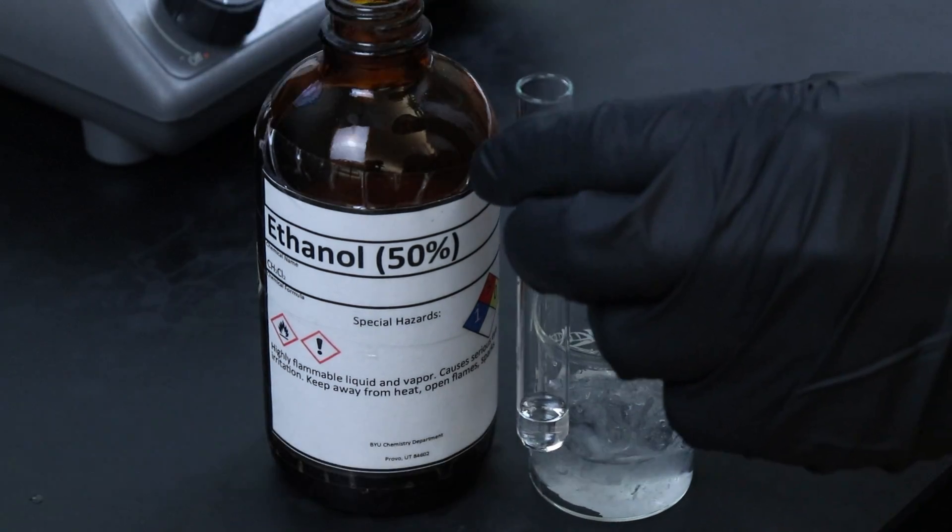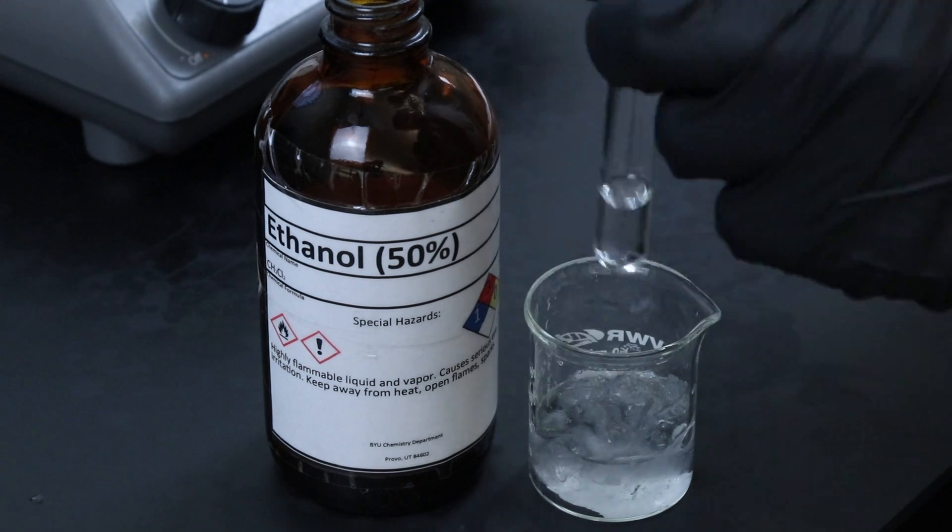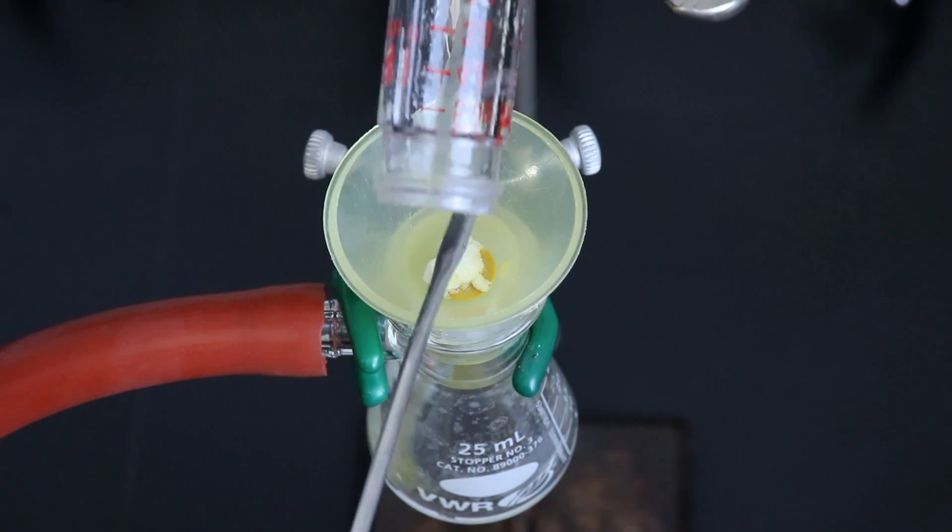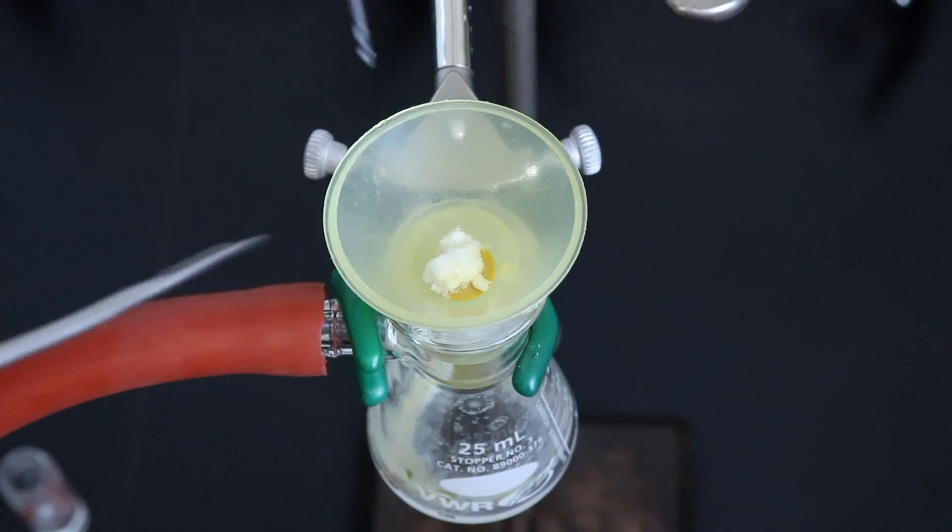I want it cold so that the product doesn't also dissolve and go through the funnel so I'll place it in some ice and then rinse the conical vial with that ethanol and the product that remains as well.